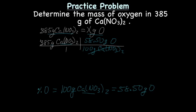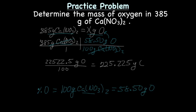Our units and compounds cross out and we're left with gram O, which is what we're looking for. Now, we multiply across the top and that gave me 22522.5 grams oxygen over 100. And now we divide, giving us 225.225 grams oxygen.